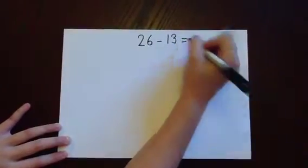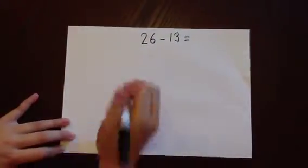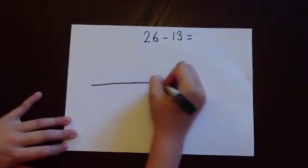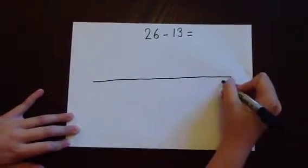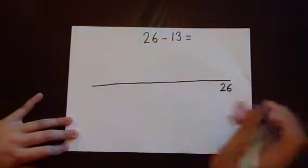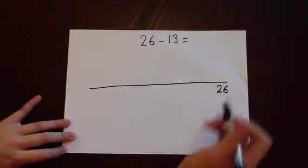As we're taking away a number that has both a 10 and a unit, we're going to do a large jump of 10 in one go. Starting on the right, we write the number 26 and partition 13 into a 10 and 3 units.